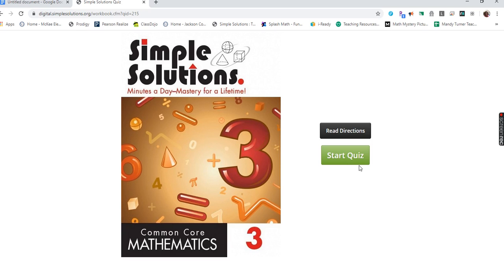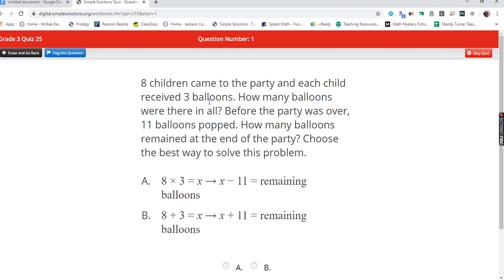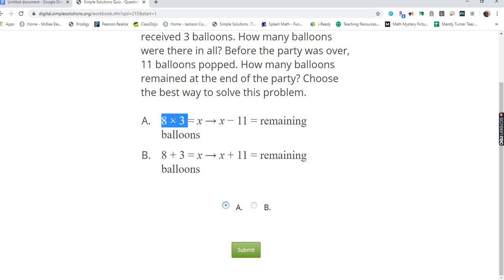Okay, so we are on quiz number 25. Let's start the quiz. Eight children came to the party and each child received three balloons. How many balloons were there in all? Okay, so 'in all' is going to be a larger number. So I'm going to multiply. If I have eight children and they each receive three, it's eight groups of three, so eight times three. Before the party was over, eleven balloons popped. How many balloons remained at the end of the party? Choose the best way to solve this problem. Well, eight times three is twenty-four, and twenty-four minus eleven there would be thirteen balloons left.